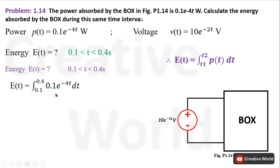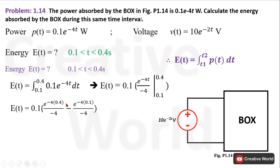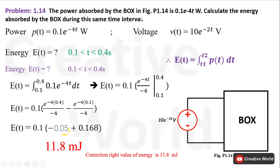Entering the power value into the integral and integrating from 0.1 to 0.4 seconds: the integral of the exponential gives the coefficient out front and the exponential power is written in the denominator — in differentiation we multiply, but in integration we divide by the derivative of the exponential power. After entering the time limits and evaluating, we get the energy equal to 30–33 millijoules. Thank you, see you in the next video.